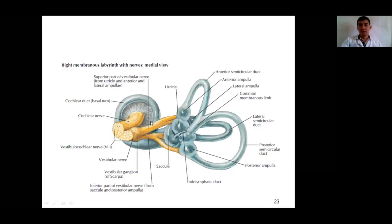The membranous labyrinth is suspended within the perilymph of the bony labyrinth. Within the cochlea it is represented by the cochlear duct; within the vestibule by the utricle and saccule; and within the semicircular canals by the semicircular ducts — the anterior, posterior, and lateral semicircular ducts.